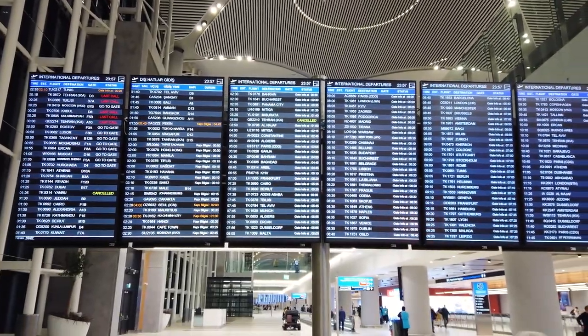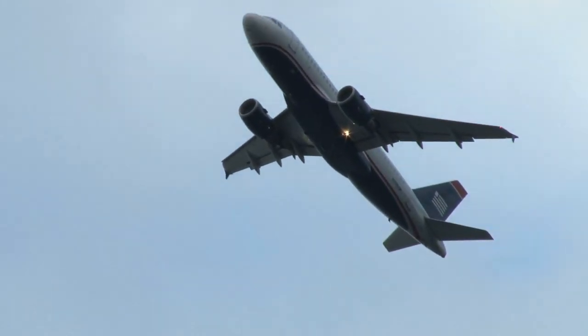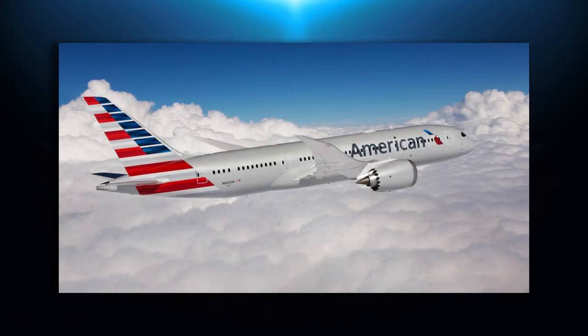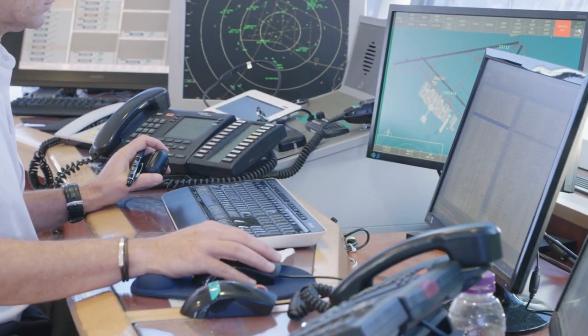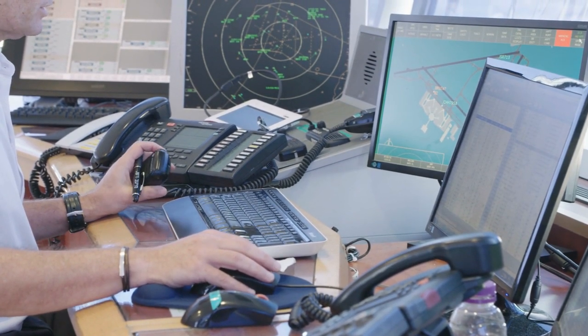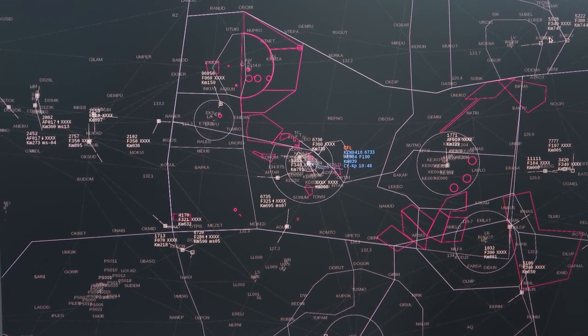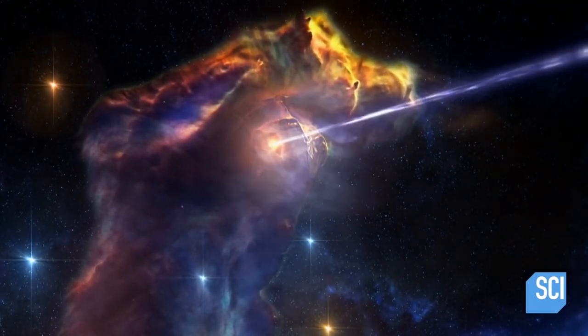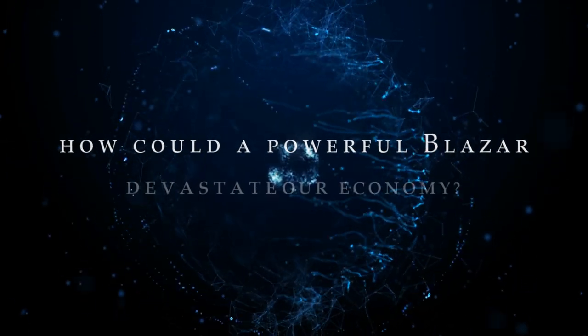With a staggering 100,000 flights crisscrossing the American skies daily, any disruption to our GPS navigation systems could spell disaster for air travel and the global economy. In 2019, major airlines like Delta, American Airlines, and United experienced the consequences of GPS issues firsthand. With air traffic control systems in disarray, countless delays and over 400 flight cancellations ensued, exposing the delicate nature of our GPS infrastructure and the dangers of over-reliance on these systems. Though the recent incident was merely a degradation and not a total collapse, it raises the chilling question: how could a powerful blazer devastate our economy?